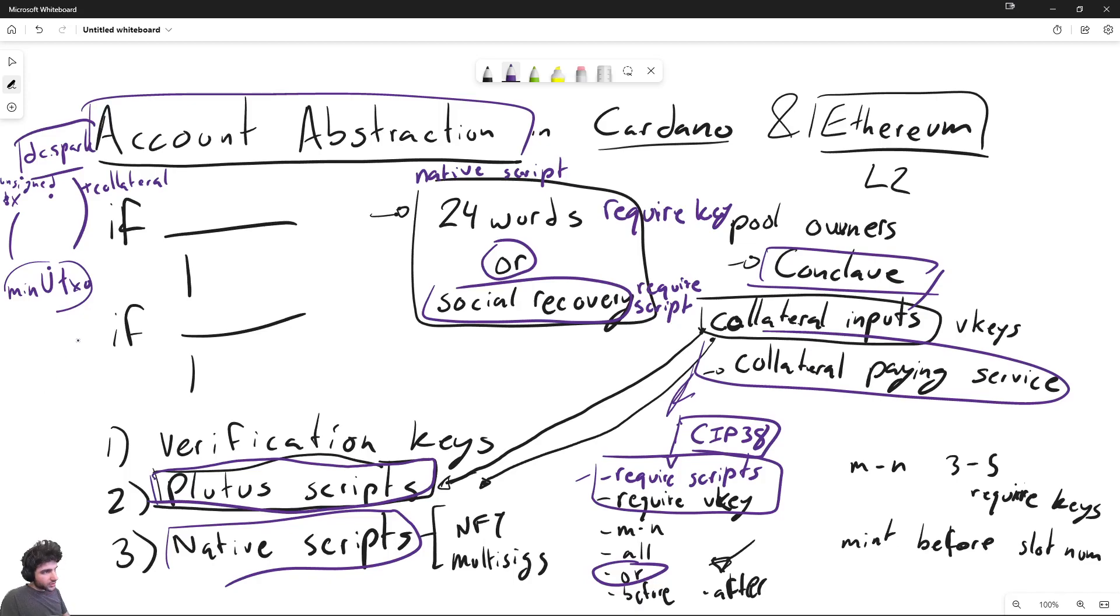But another thing that might be interesting is there's a SIP currently being discussed for post-quantum cryptography. And the problem with post-quantum cryptography for Cardano is it's not currently supported anywhere in Cardano. We don't have a unique quantum, post-quantum cryptography scheme.